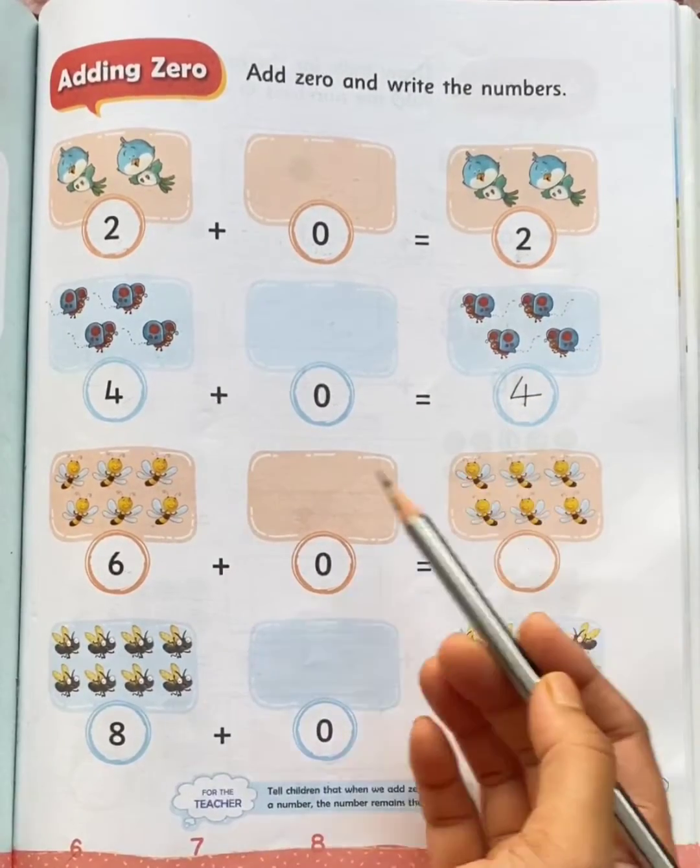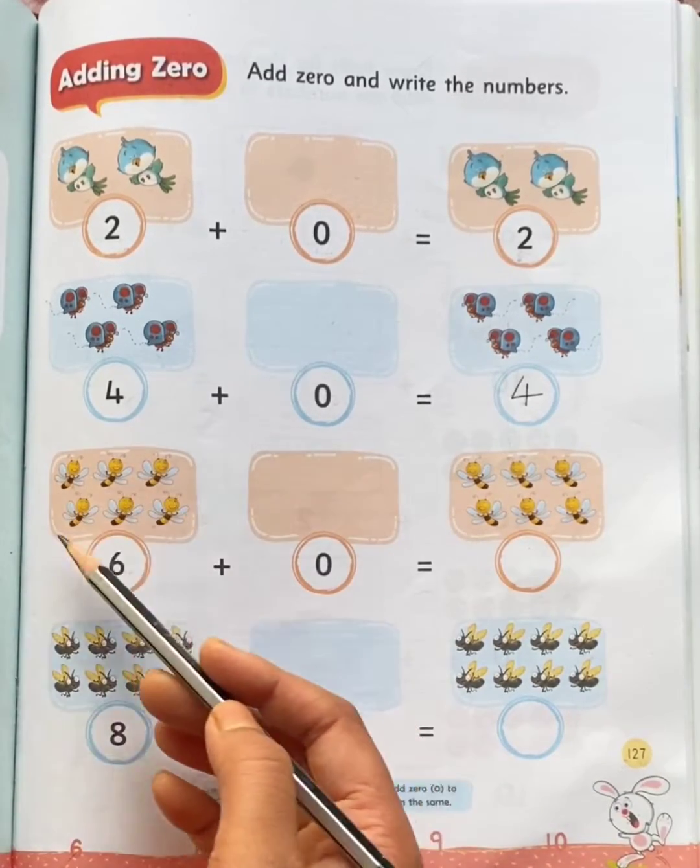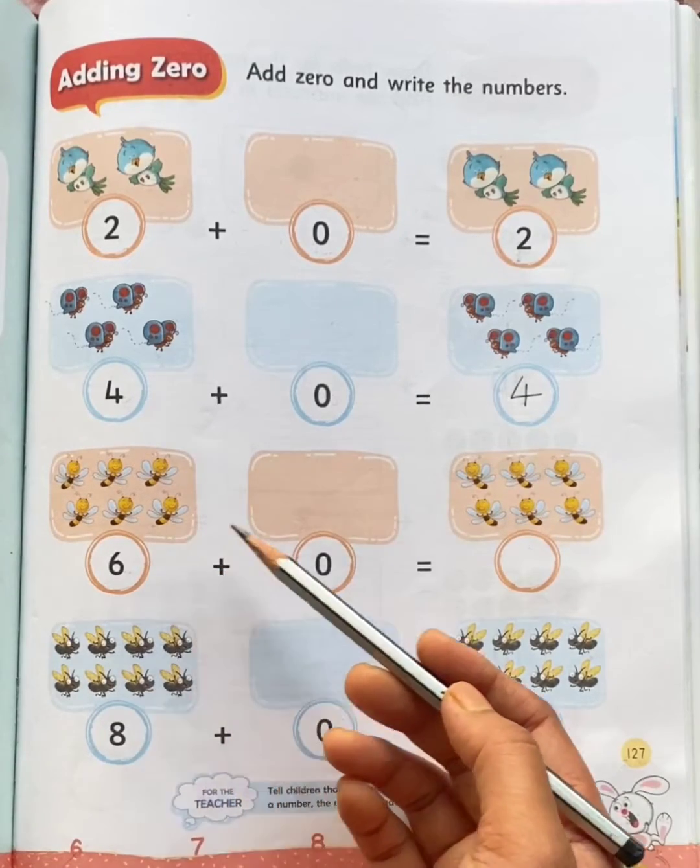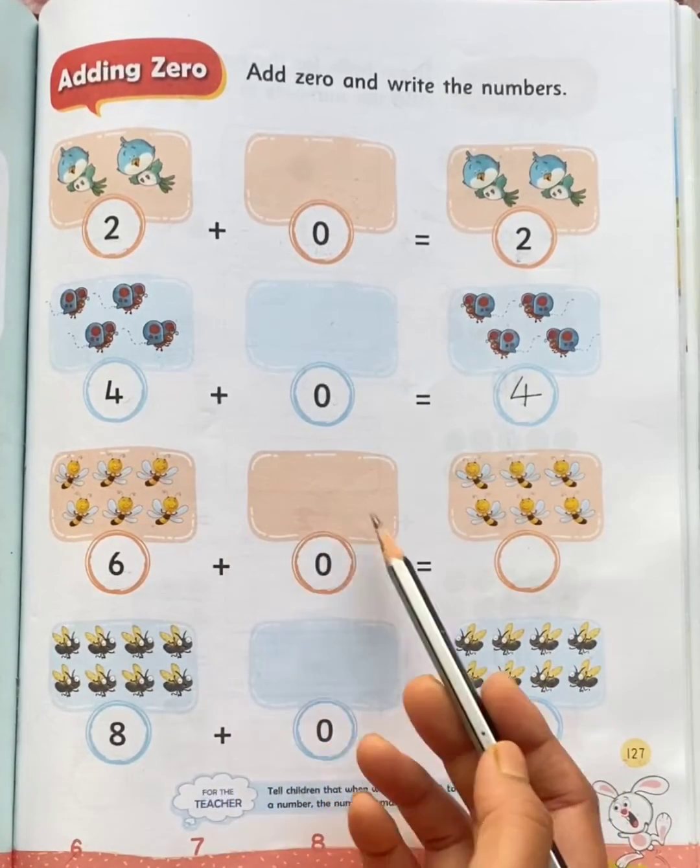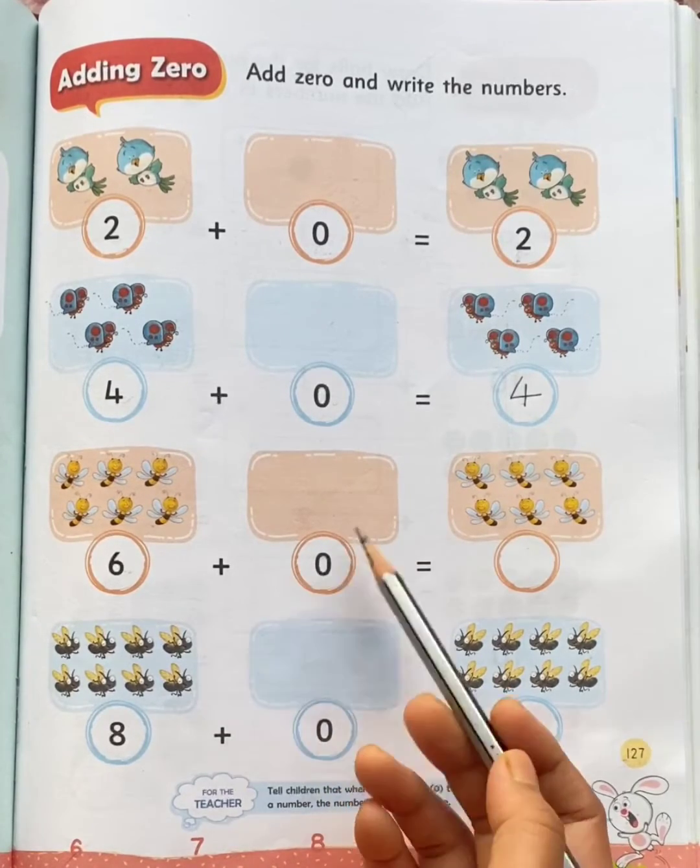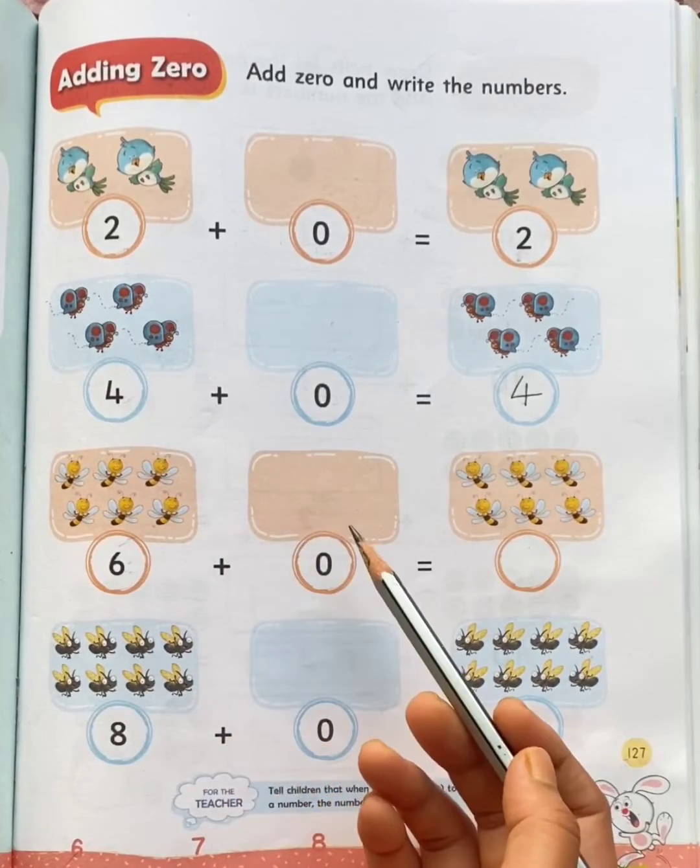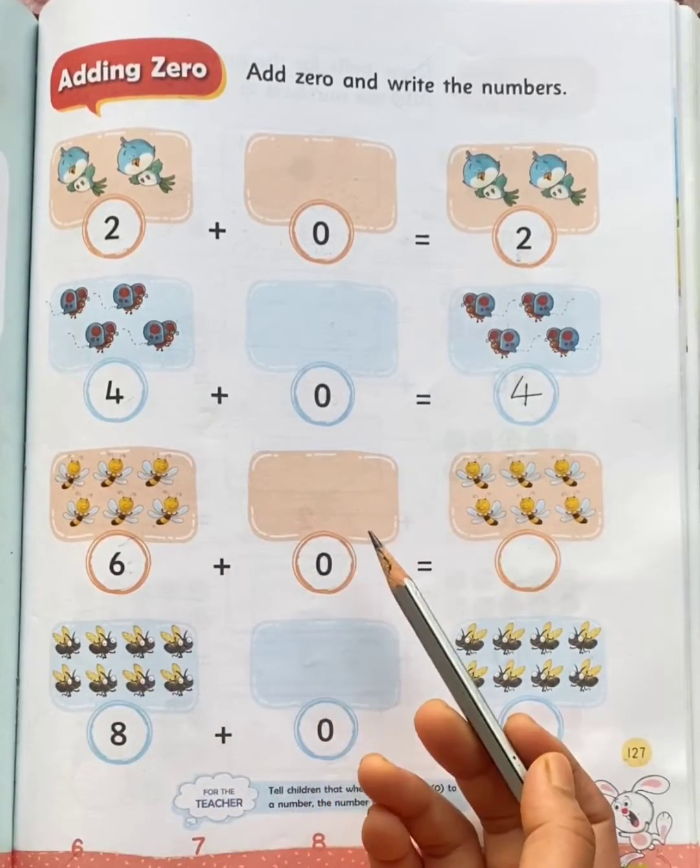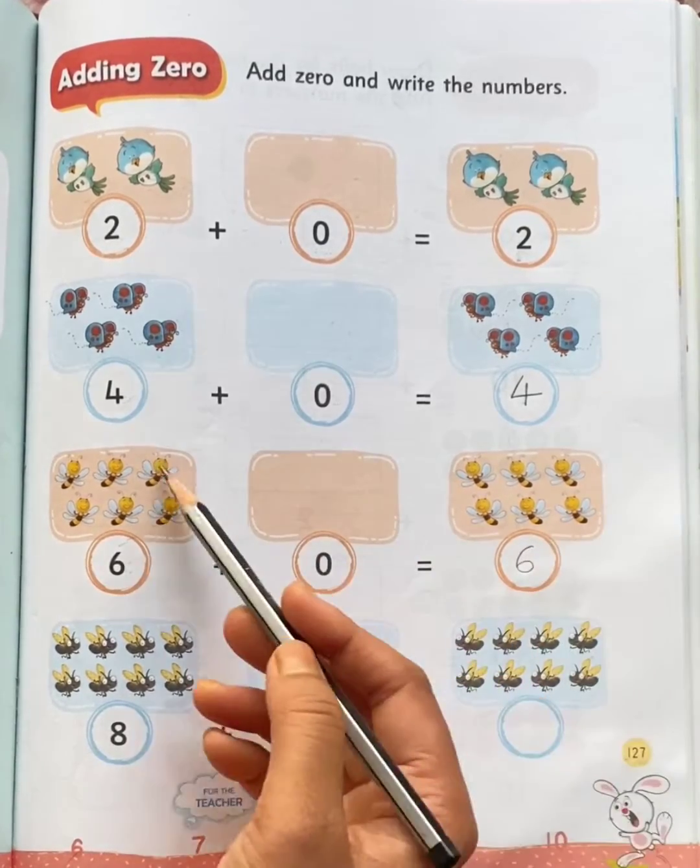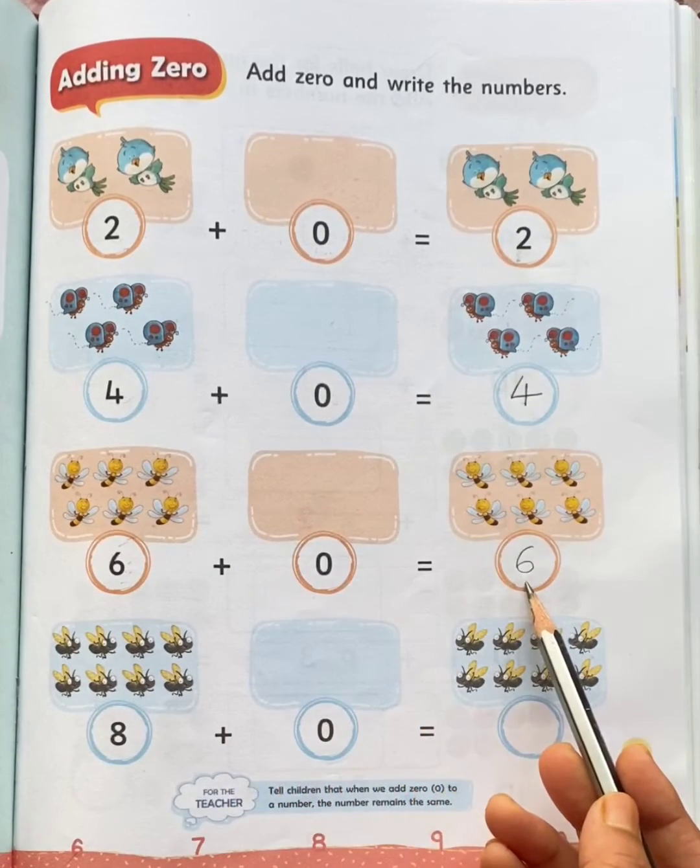Look here. There are one, two, three, four, five, six, six bees in the first set and zero bees in the second set. So how many bees are there in both the sets in all? Yes, thus there are six bees in all. Thus, six plus zero is equal to six.